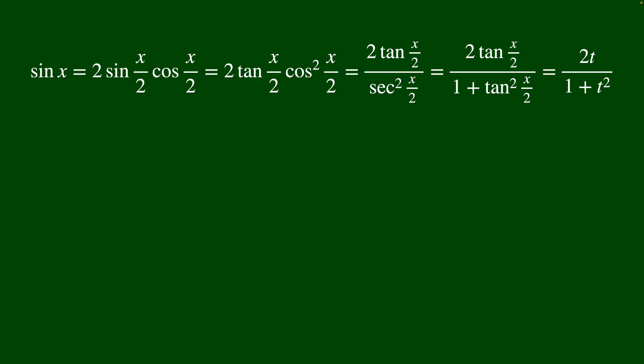And then our third equality is just because secant squared is just 1 over cos squared. And finally, we're lucky here because secant squared is also 1 plus tan squared. So we do that substitution where t is tan of x over 2, and we get our first Weierstrass substitution trick.